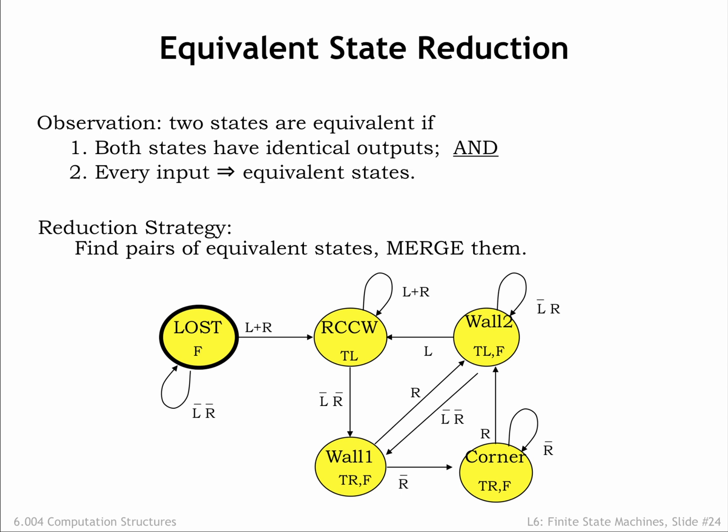Let's assume that wall 1 and corner are equivalent and ask if they transition to equivalent states for each applicable combination of input values. For these two states, all the transitions depend only on the value of the R input, so we just have to check two cases.